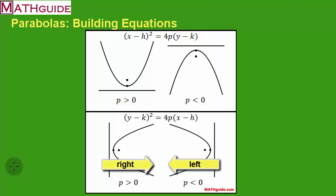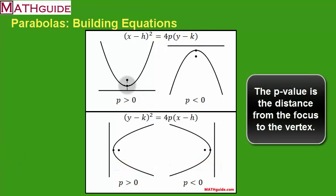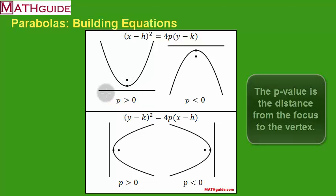That's a little review of what the equations look like. Just remember the p-value is the distance from the vertex, that extreme point on the parabola, to the focus, which is also the same as the distance from the vertex to the directrix.